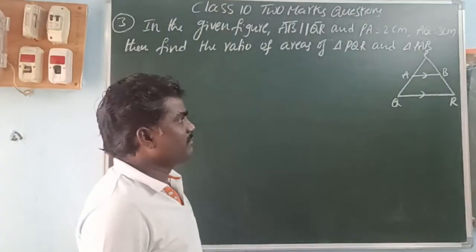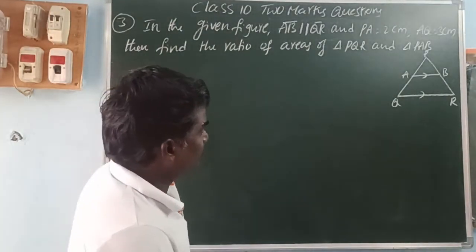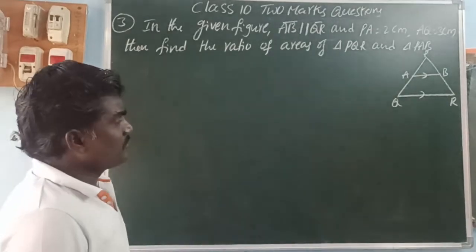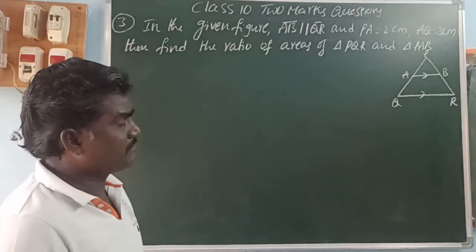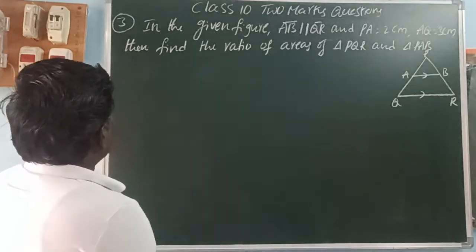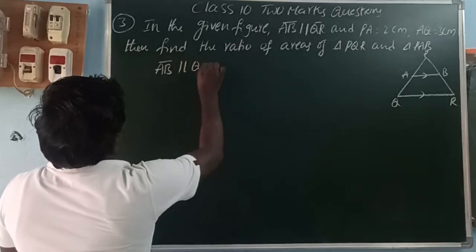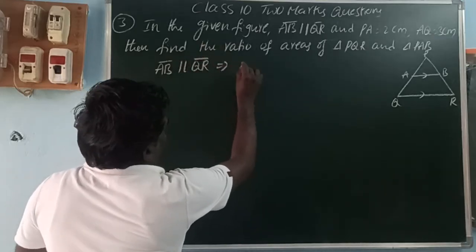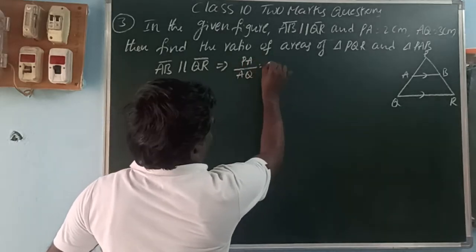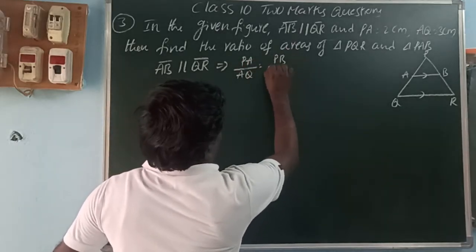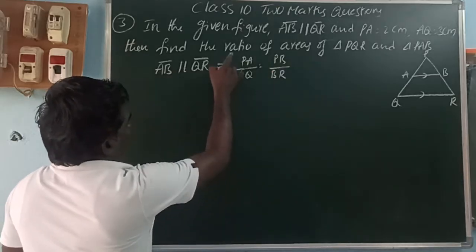In the given figure, AB is parallel to QR, PA = 2 centimeters, AQ = 3 centimeters. Find the ratio of the area of triangle PQR to the area of triangle PAB. Since AB is parallel to QR, we can use the Basic Proportionality Theorem: PA/AQ = PB/BR.